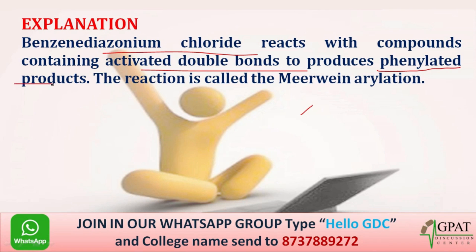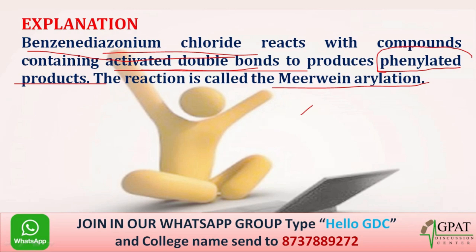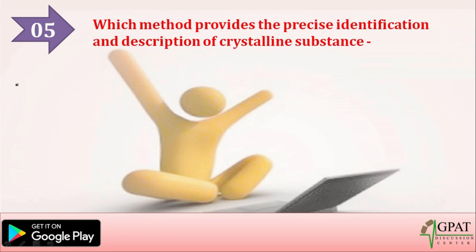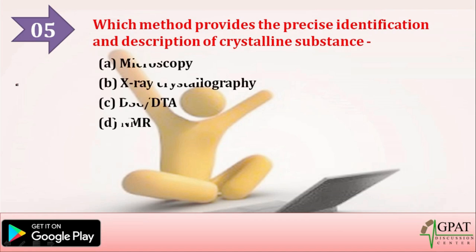The Meerwein arylation: benzene diazonium chloride reacts with a compound containing activated double bonds to produce a phenylated product. So the reactant is benzene diazonium chloride, it reacts with a compound containing activated double bonds, and the product is the phenylated product.